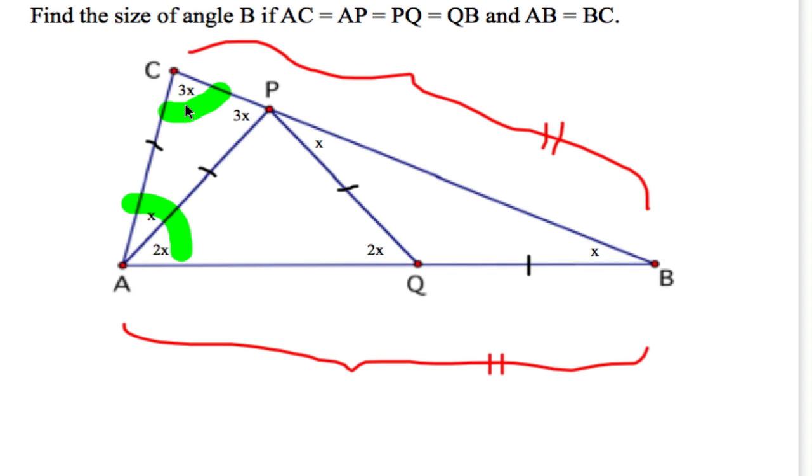So that these are both 3X. That means that I've got in triangle ABC three angles, 3X, 3X, and X sums to 180, and that means X is 180 over 7, which is the size of angle B.